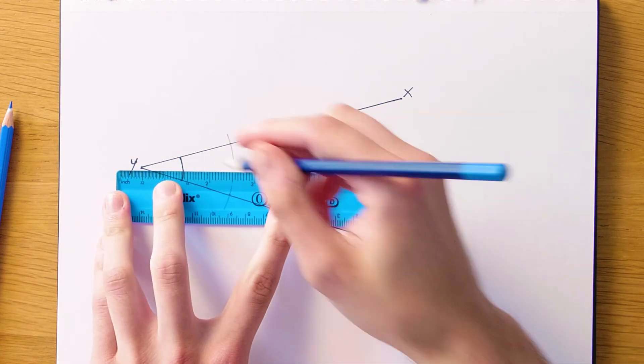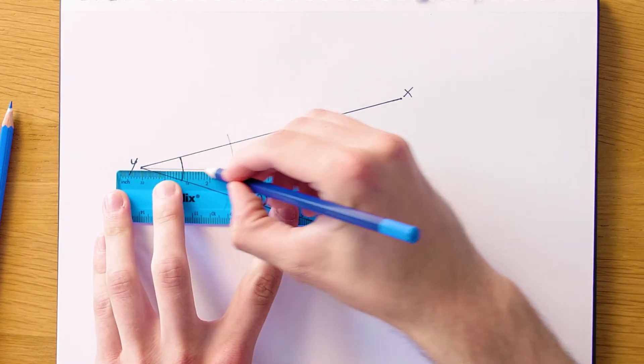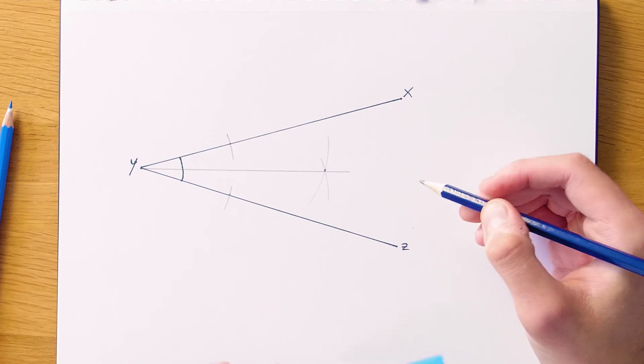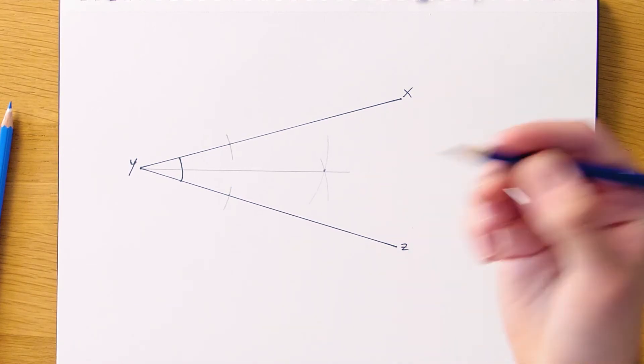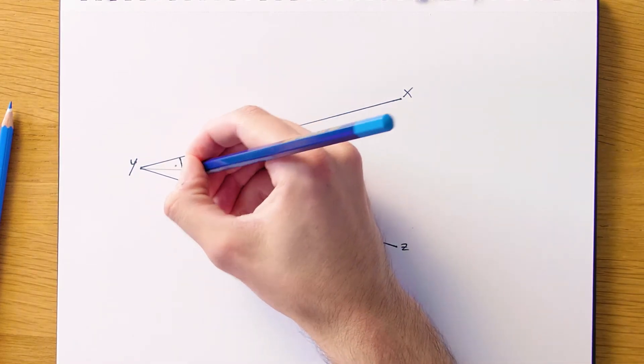So if we just join that back to the point Y we have our actual bisector, the line of bisection, and that's our angle bisected. So we have two equal angles in here now and just in case you're wondering why this works, it's because we've actually created two congruent triangles on our construction.